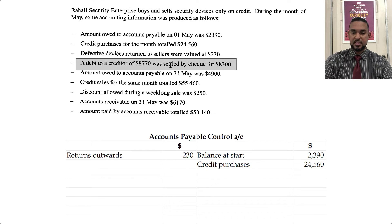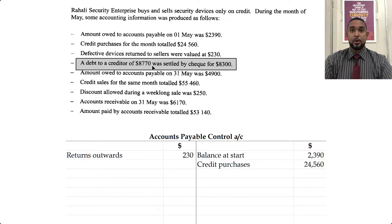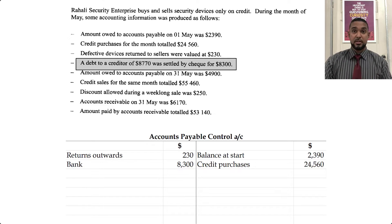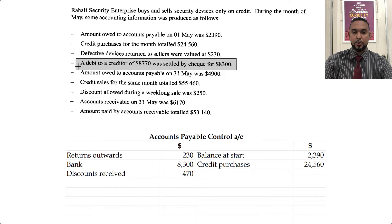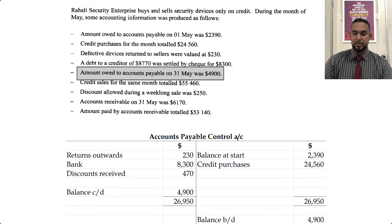A debt to a creditor of 8770 was settled by cheque for 8300. If you had a debt of 8770 and you settled it, you paid it off with nothing still owing, but you only paid 8300. The extra 470 was clearly discount received from the creditor. When you pay money to your creditors, you reduce your liability — to record that decrease, you debit the liability account. When you receive discount from your creditor, they are also reducing your liability, which requires a debit. The closing balance will be recorded initially on the debit side as being carried down, then we put the totals and bring the balance down.